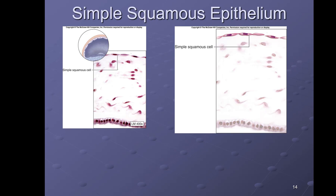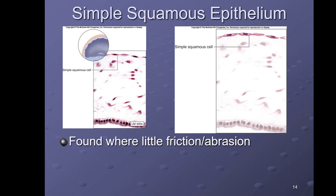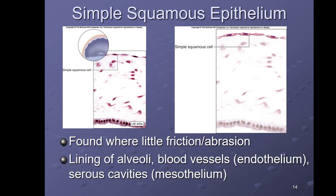Simple squamous epithelium — one layer of flat cells. You find this where little friction or abrasion occurs and where you want substances to cross easily. Great examples include the alveoli, or air sacs in the lungs, which have simple squamous epithelium to allow oxygen and carbon dioxide to get across; the inner lining of blood vessels, called the endothelium; and serous cavities, where it is called the mesothelium.